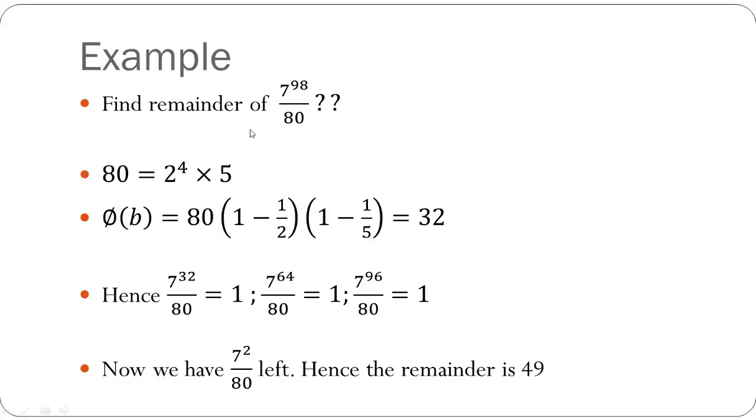So whenever we find the remainder of the format 7 raised to 32 upon 80, our answer will be 1. Similarly, 7 raised to 64 upon 80, the remainder will be 1. Similarly, 7 raised to 96 upon 80, the remainder will be 1. That means 7 raised to 32 or any multiple of 32 divided by 80 will give you the remainder 1. Hence till 7 raised to 96 upon 80, you can get the remainder value as 1.